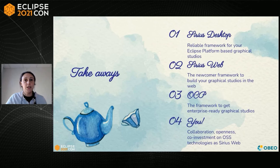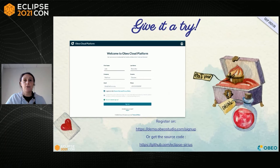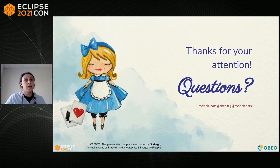This is the end of Alice's story — well, not really the end. It's your turn to give it a try. Two solutions: you can run it by yourself — go to GitHub, get the source code. Or, easier, you can test our free sandbox — you can test all the features I showed you. You just have to fill in the sign-up form and we will send you an invitation. Thanks for your attention, if you have any questions do not hesitate.